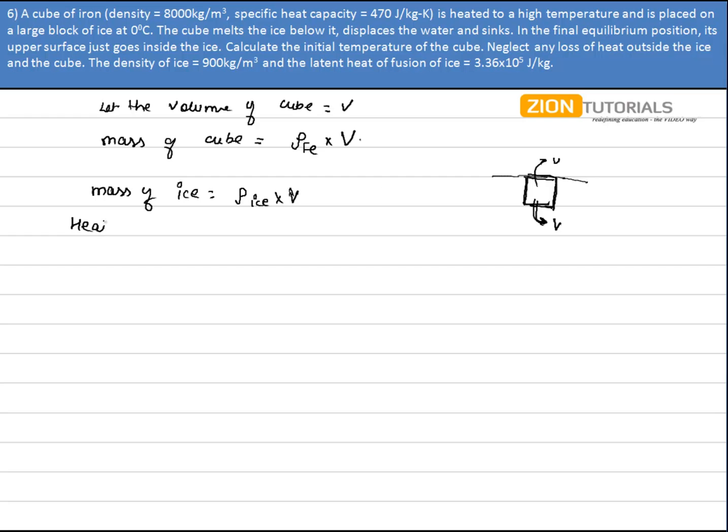Now again no heat losses. So heat loss is equal to heat gained. Heat is lost by the iron cube. So heat loss will be given by mass of iron into specific heat of iron into T, that is the temperature of the cube initially. Final temperature of the cube will be zero because it is completely submerged in ice now.